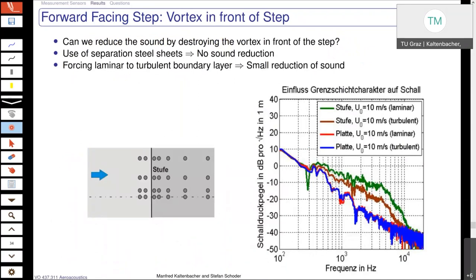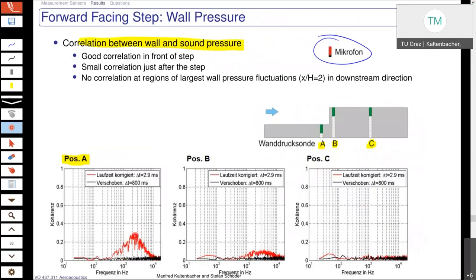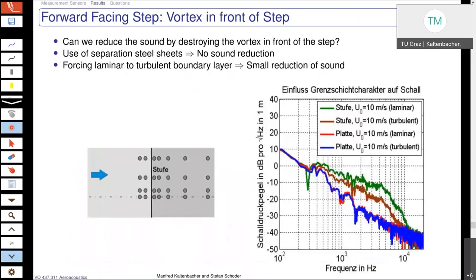This means that from the flow structure in front of the step, there will be a strong contribution somehow to the generated sound. Now the question is: can we perhaps reduce the radiated sound by destroying the vortex in front of the step? We tried this — what we actually did was put some separation steel sheets in here, so that when the flow is coming in, we separate this really large vortex structure in front.